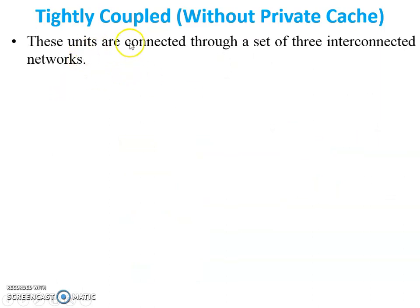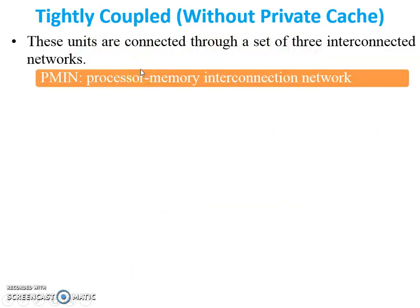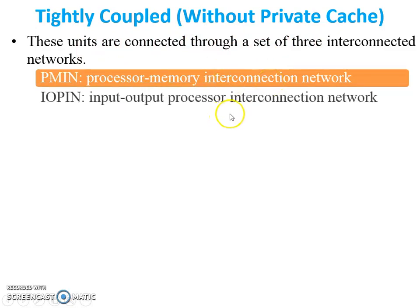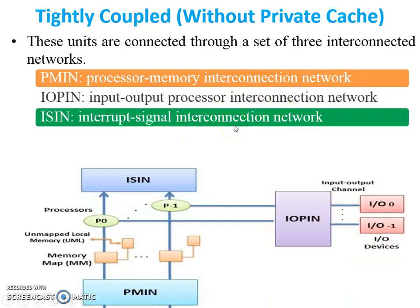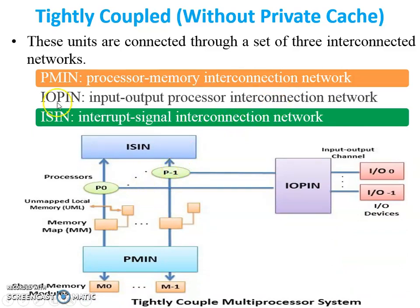These units are connected through a set of three interconnected networks: PMIN — processor-memory interconnection network; IOPIN — input/output processor interconnection network; and ISIN — interrupt signal interconnection network. In the figure, memory is accessed through the PMIN network, so processors and memory are connected through PMIN. Input/output devices are connected through IOPIN, and ISIN generates signals for the processors.